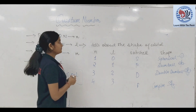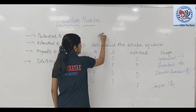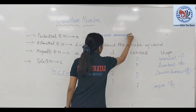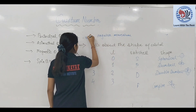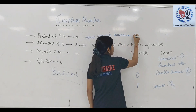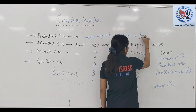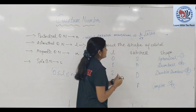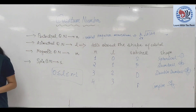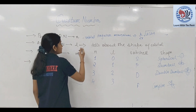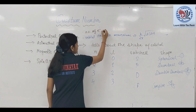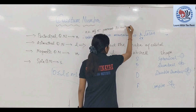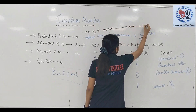अगर हमें L की value पता है, तो orbital angular momentum निकालने के लिए formula है: h/2π × √(L(L+1))। इस formula से हम orbital angular momentum निकाल सकते हैं। और number of electrons present in a sub shell होगा 4L + 2।